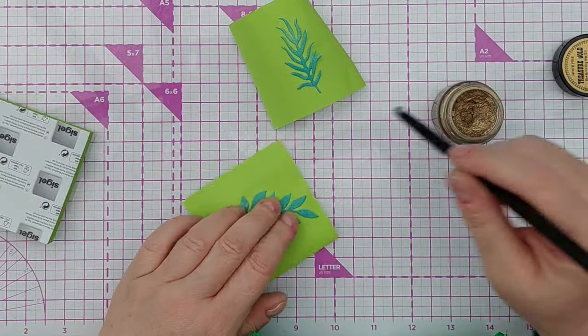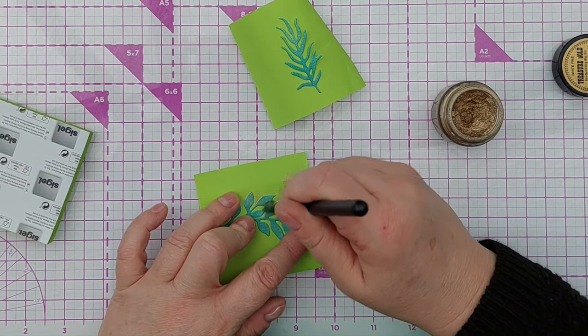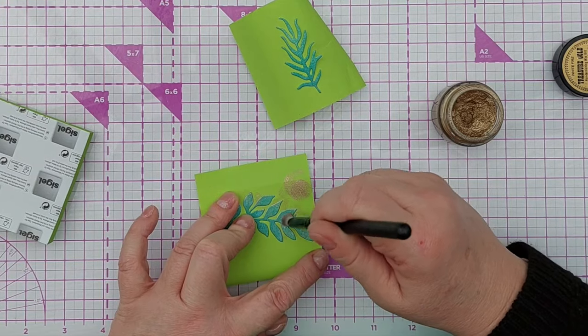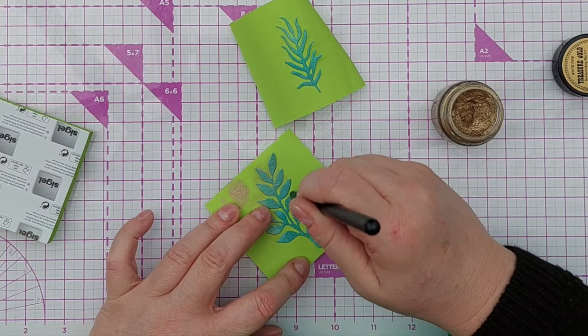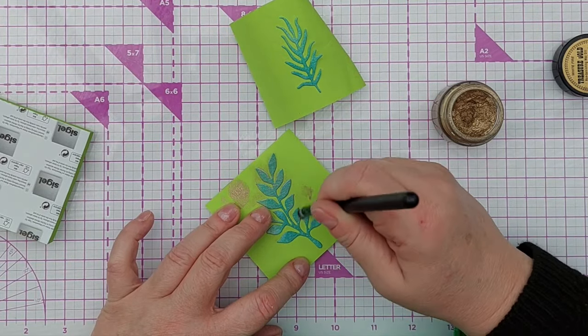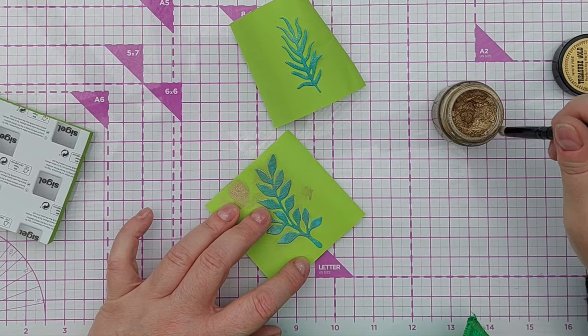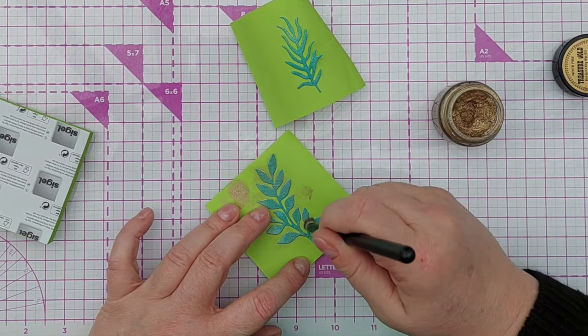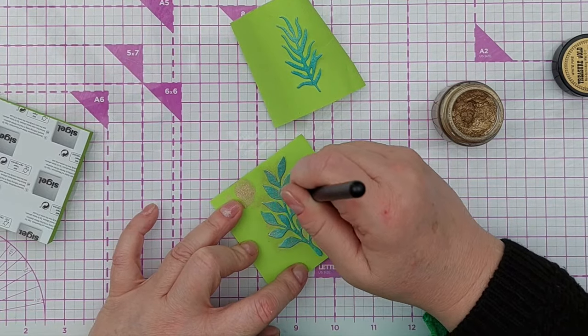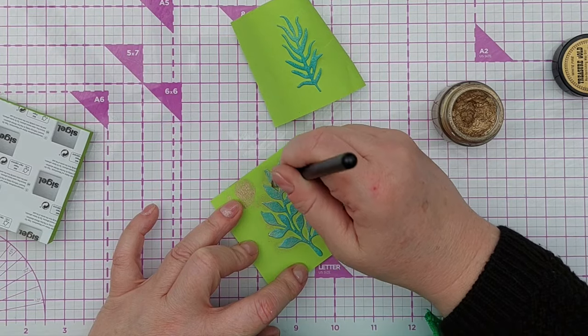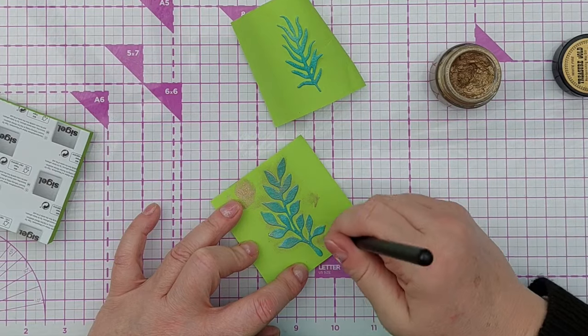I've got my gold gilding wax here and I'm just going to gild a little bit of these leaves to give them some highlights. I'm popping them on sticky notes on the sticky side to help keep them still so I don't accidentally damage them. I would do this on my grip mat but I'm not sure how the gilding wax will affect it because it's got all sorts of volatile chemicals in it.